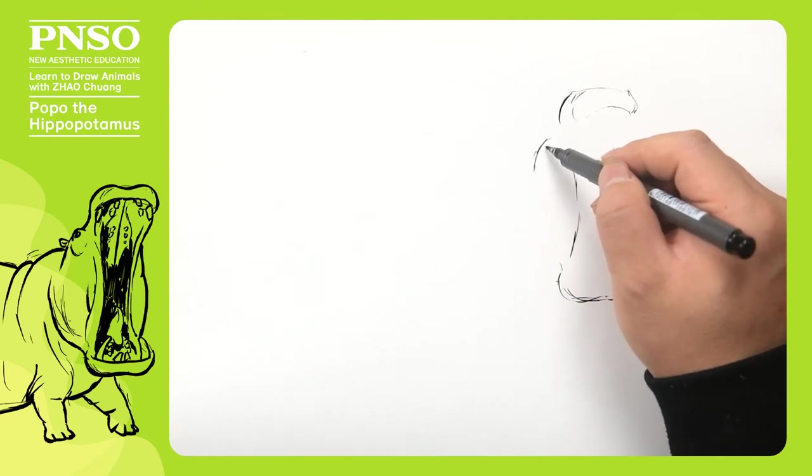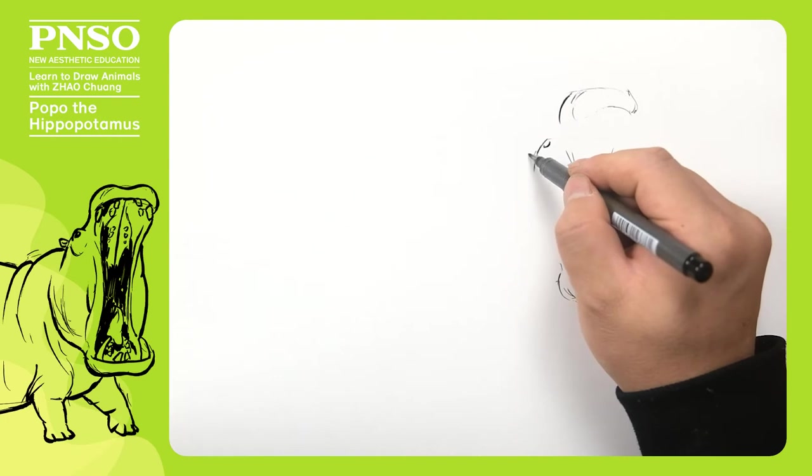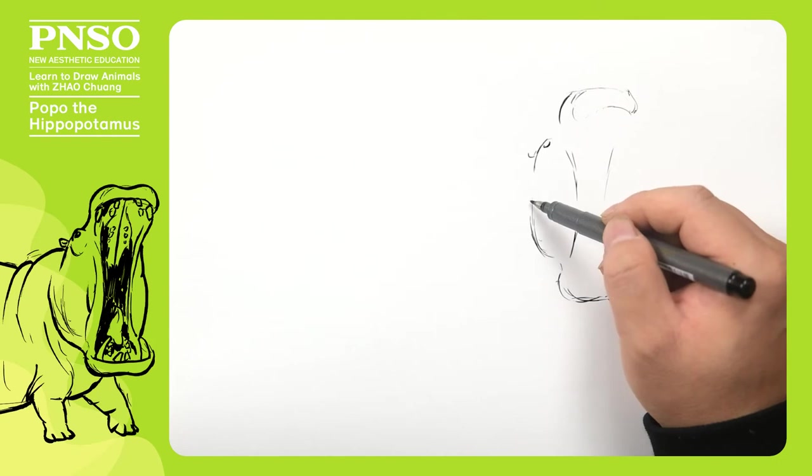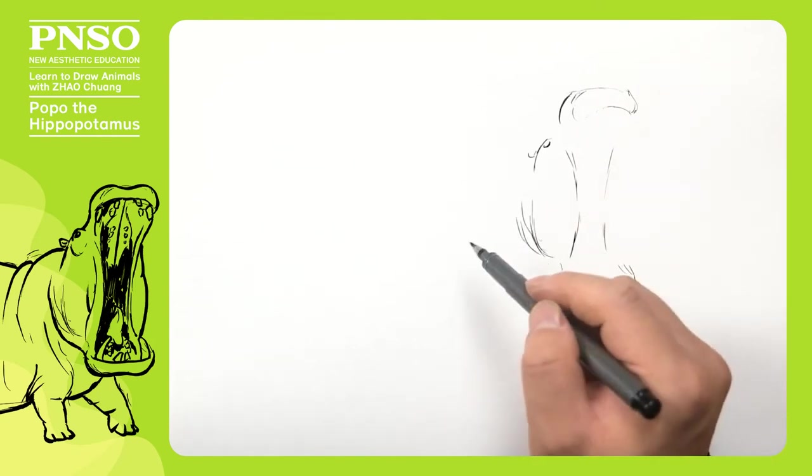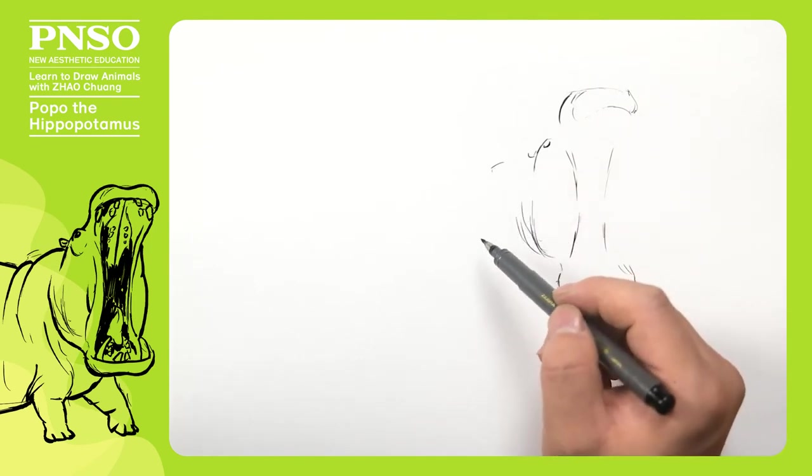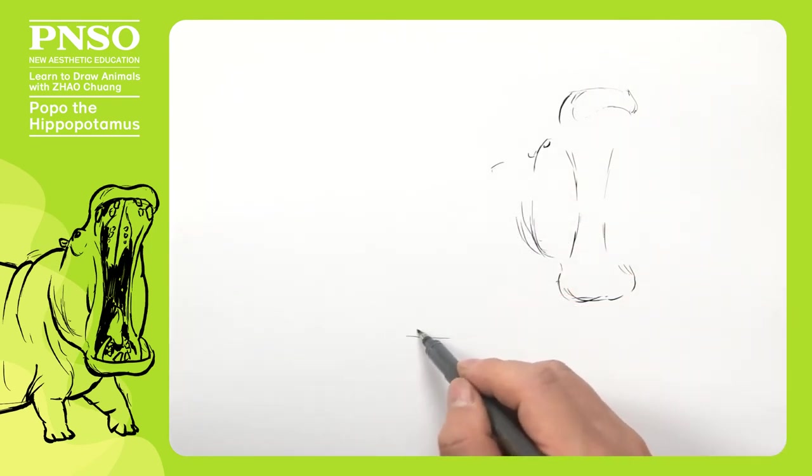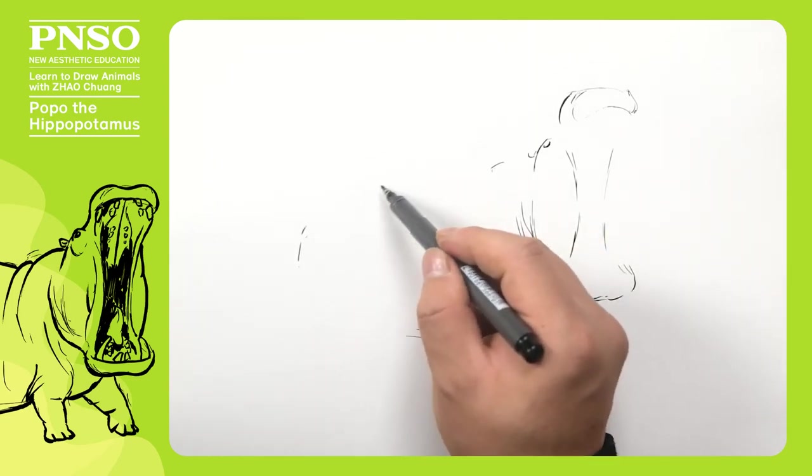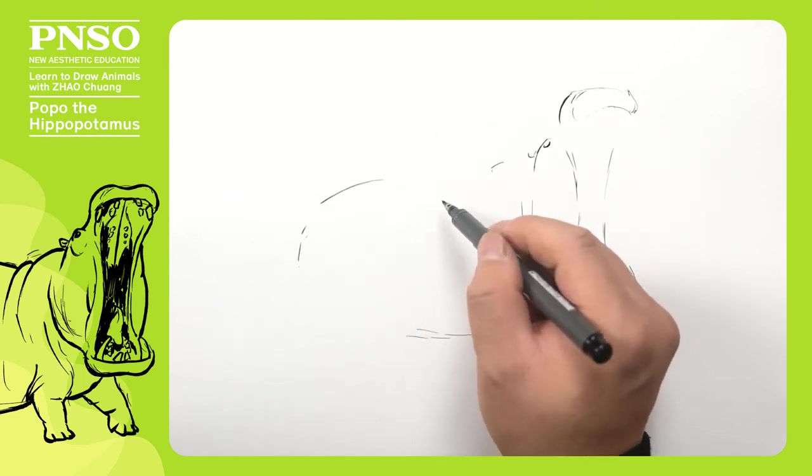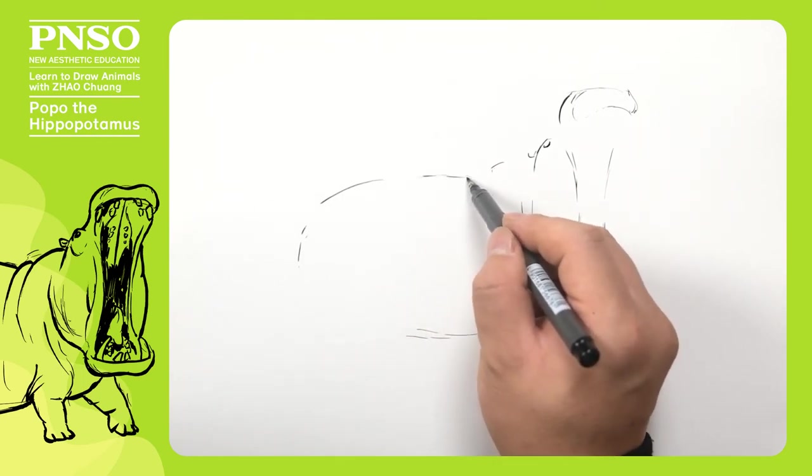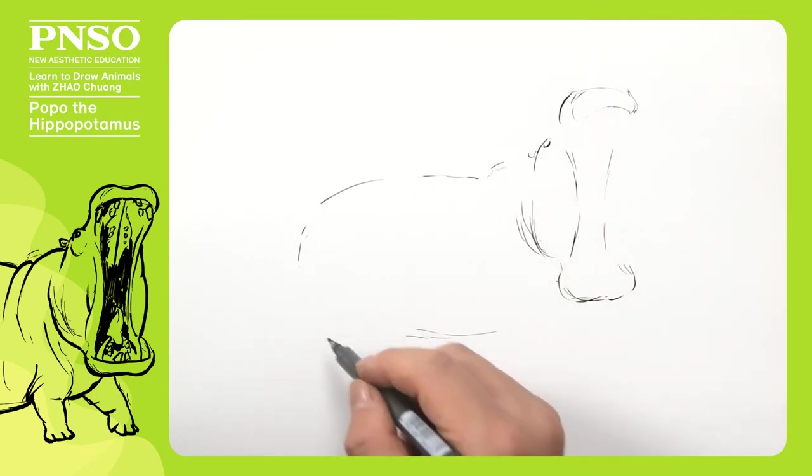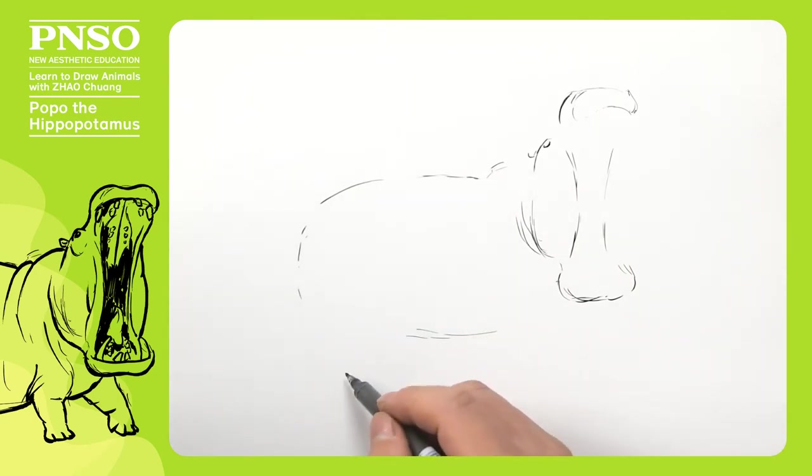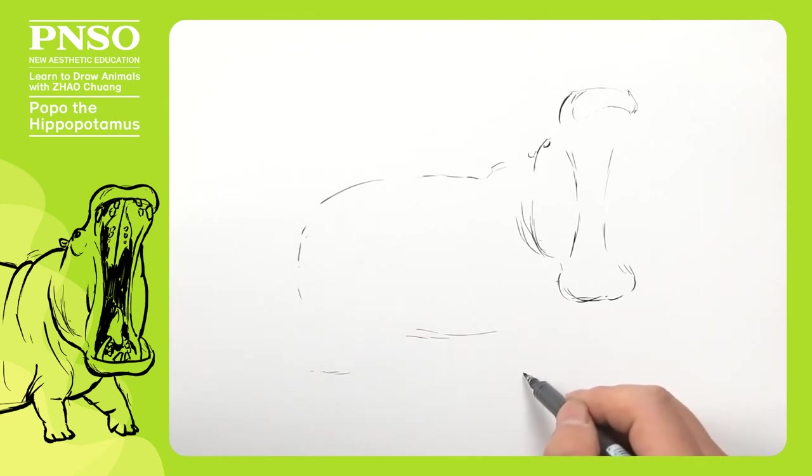The eyes on its head are about here. Behind its eyes, we draw its ears, followed by its face. Then moving backward, we draw its trunk. First we draw the outline of its trunk. For example, the position of its hips. Its trunk is round, and shaped like a goose egg. Its legs are short, so we can just draw them like this.